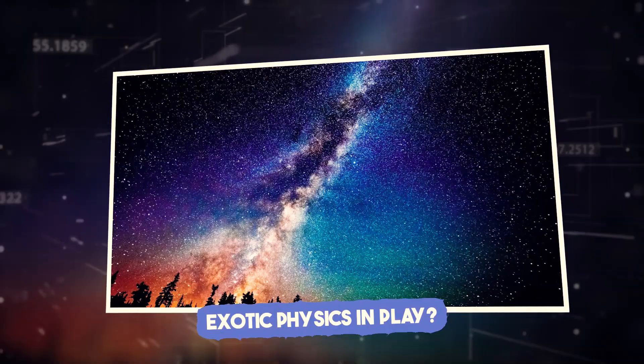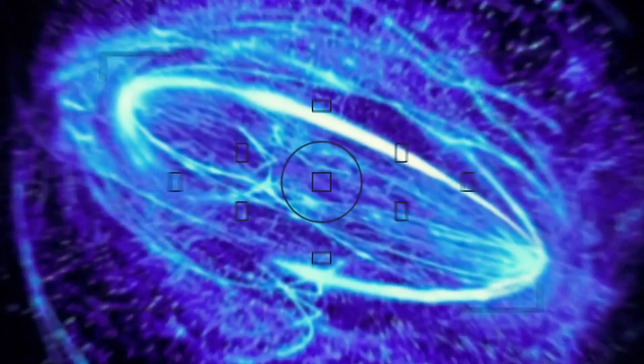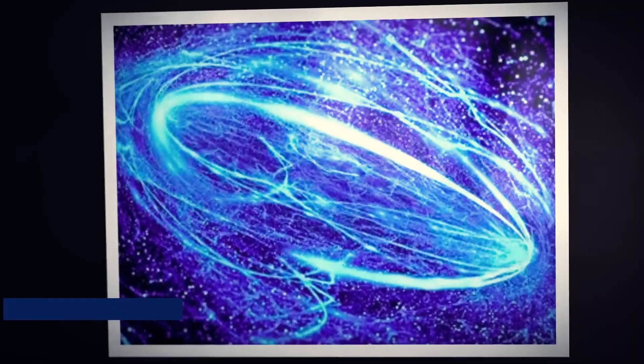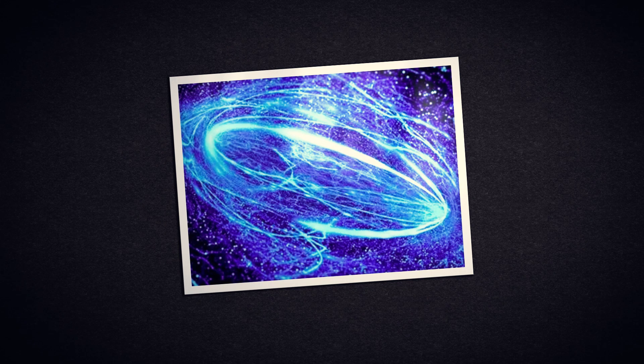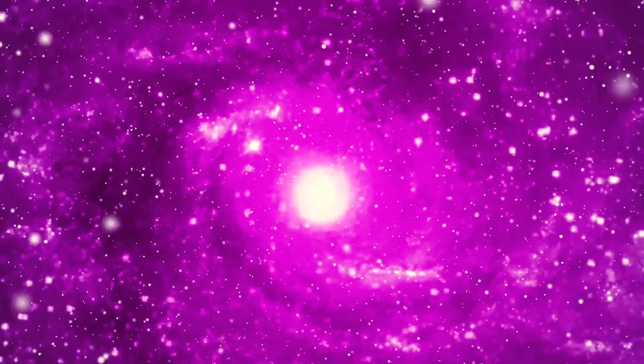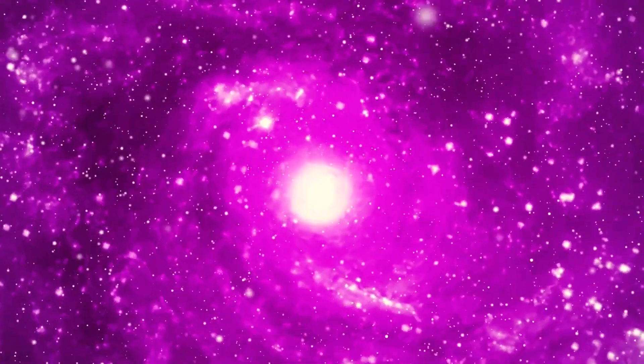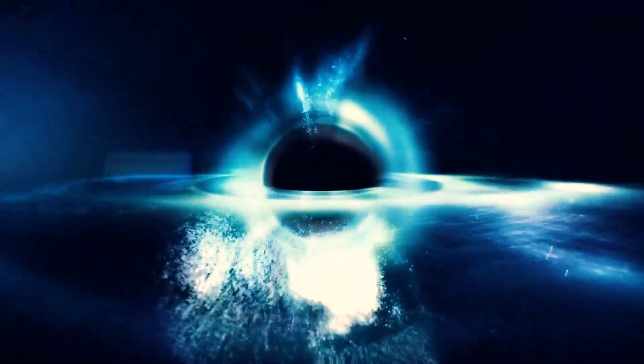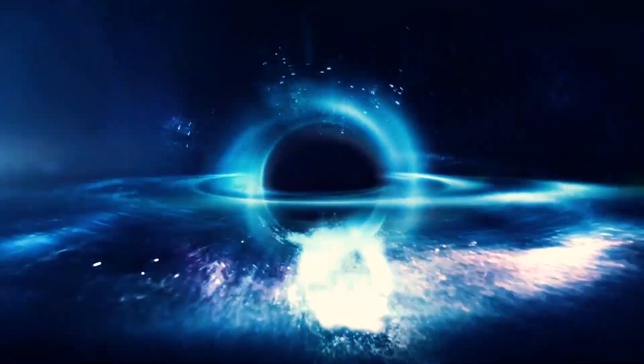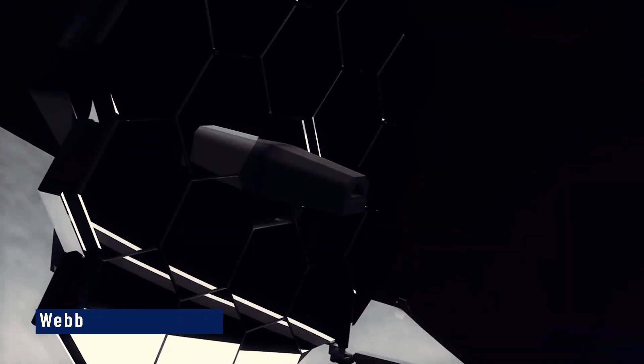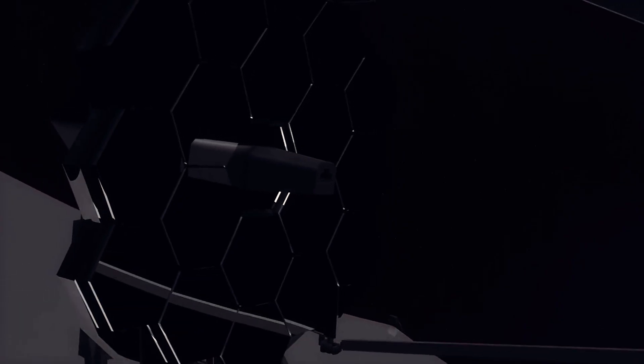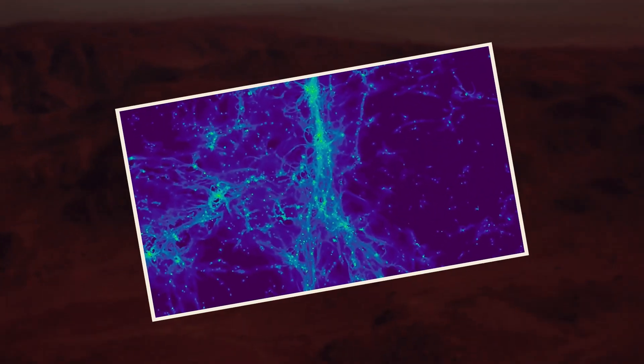Exotic physics in play? Could the filament be shaped by the universe's hidden architecture? Plasma currents riding on magnetic fields? Or even a cosmic string left over from the Big Bang? These ideas, once the realm of theory, are now being reconsidered. Plasma, after all, can be organized by magnetic lines, forming strands that persist for years. Webb's spectral data shows clear signatures of ionized metal, hinting at such a process.